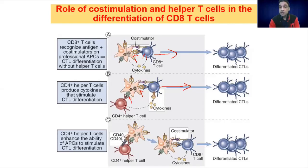But CD4 cells can also activate CD8 cells indirectly. If a CD4 cell communicates successfully with the dendritic cell, it comes to know that there is a problem. This communication between CD4 helper T cells and the dendritic cell activates the dendritic cell. Activation of the dendritic cell means it will produce more lysosomes for more endocytosis.